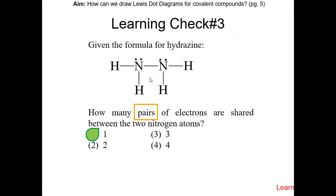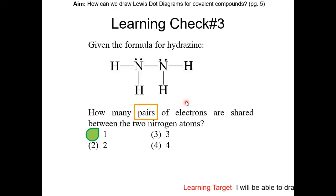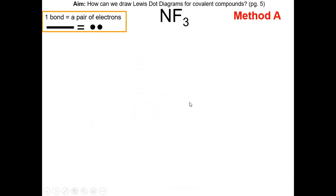On the Regents, pay attention to whether they're asking for pairs of electrons or number of electrons — people usually get tricked because they don't read carefully. Now I'm going to show you two methods for drawing the structural formula for covalent compounds. Method A is a medium-level method. First, determine which element will be in the center. Since nitrogen has the smallest subscript and forms more bonds than fluorine — nitrogen forms three, each fluorine forms one — nitrogen will be in the center.